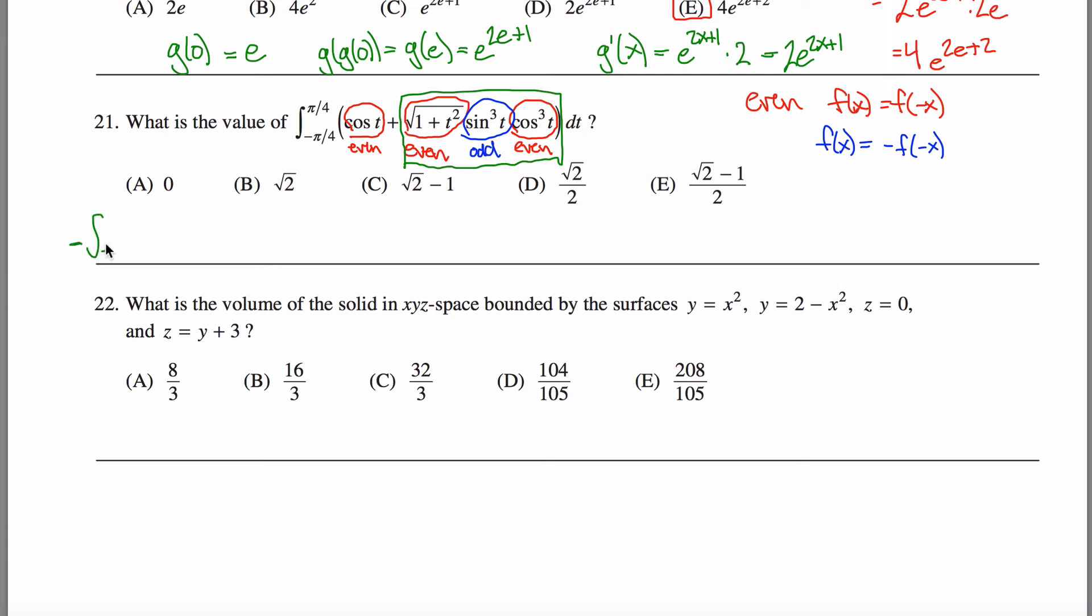When I'm evaluating this integral, I can say it's the integral from negative π over 4 to π over 4 of cosine of t. Let's break this up into steps. Plus, this has nothing to do with it being an odd or even function. This is something you can always do. The integral of the sum is the sum of the integrals of all this stuff. I guess I'll write it again: 1 plus t squared sine cubed t cosine cubed t, and then I forgot my dt's in here.